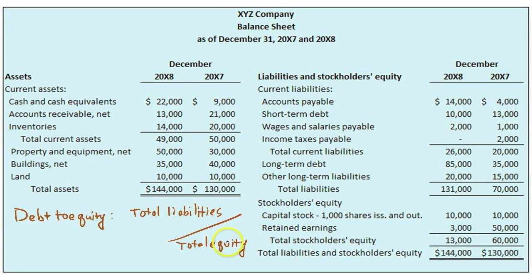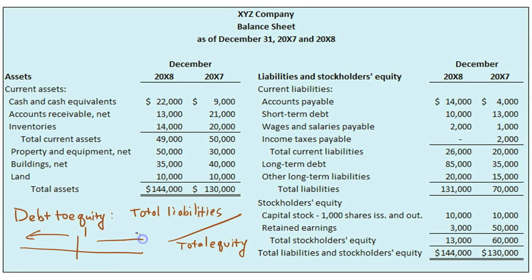If the debt-to-equity ratio is exactly one, it indicates that exactly half of all assets were funded by debt and the other half by equity. As the debt-to-equity ratio drops below one — more toward the lower end of the number line — it means the funding is more equity-based. If it is greater than one, it is more debt-funded. As the ratio continues to drop below one, the company is reducing its reliance on debt to fund assets and its leverage is going down.